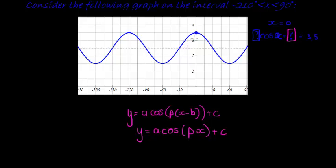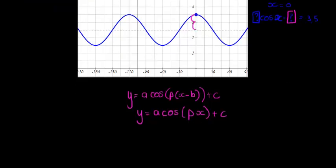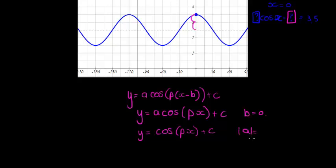The amplitude is one unit — from 2.5 to 3.5. So the amplitude is equal to 1, and the equation becomes y = cos(px) + c. The absolute value of a is equal to 1. It's not negative because if it were negative, we would have started below the center line. Since it starts above, a is positive 1.